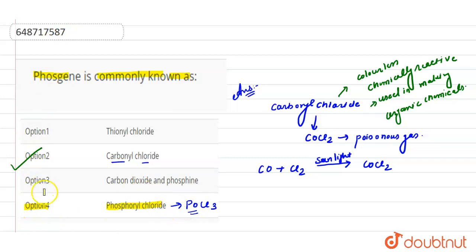Next, we see our option 3 that is carbon dioxide and phosphine. Carbon dioxide and phosphine, we have CO2 and phosphine that is pH3. So, pH3, phosphine is also called hydrogen phosphide which is a colorless, flammable and extremely toxic gas.